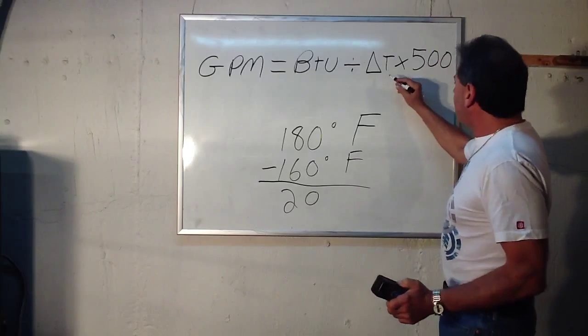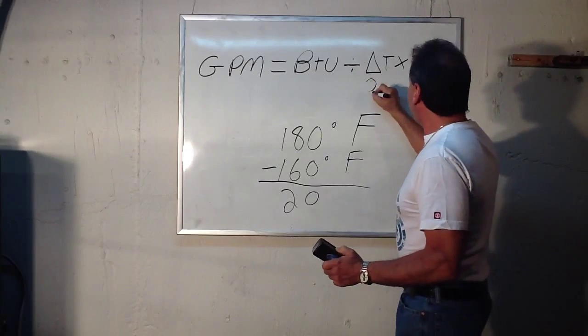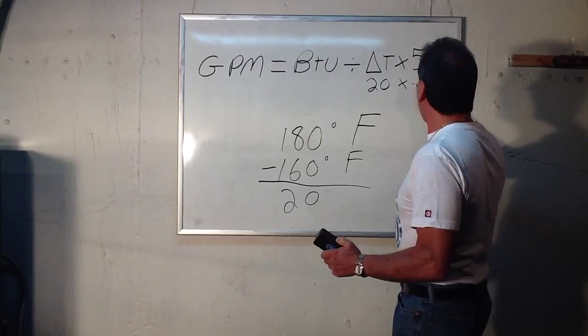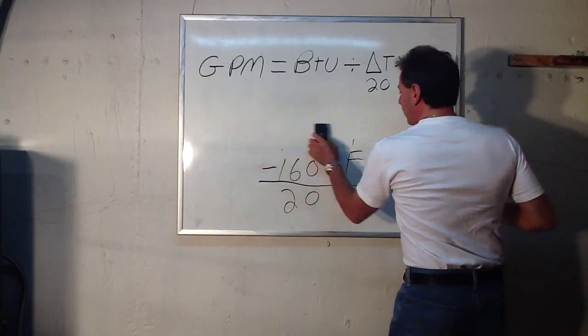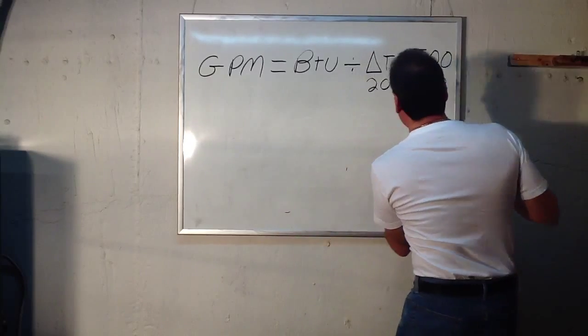So, you would take the delta T. Now we have that number, 20 times 500. Well, that's easy enough. It's 10,000.